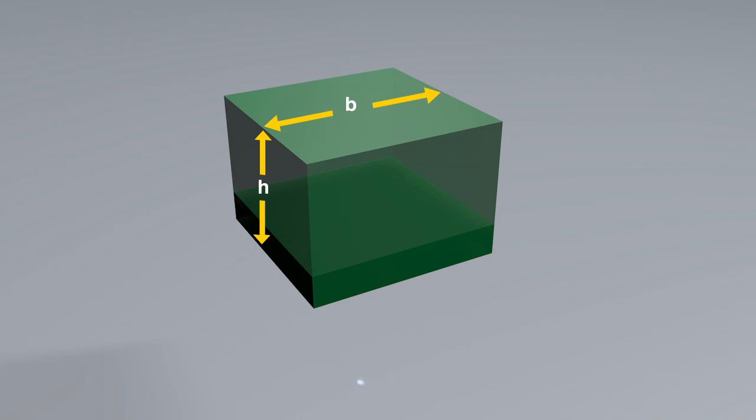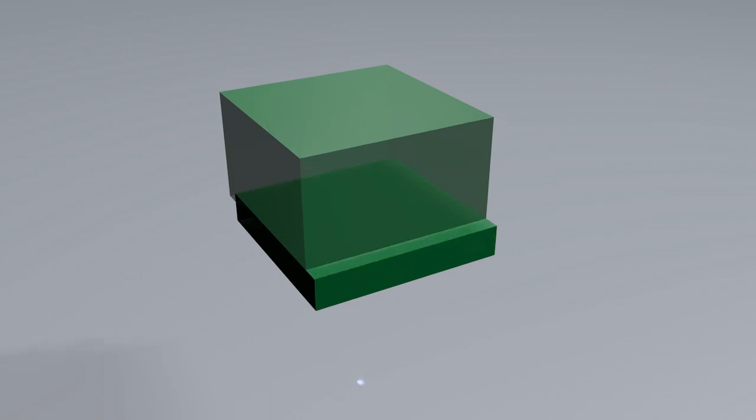Let us begin by examining a beam of rectangular cross-section. We can reasonably assume that the shear stresses act parallel to the shear force. Let us also assume that the distribution of shear stresses is uniform across the width of the beam.